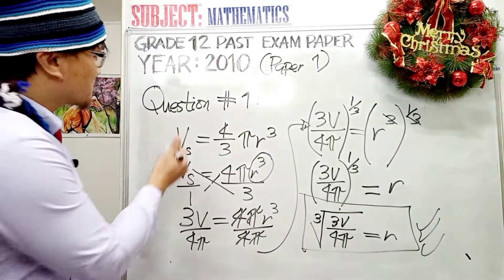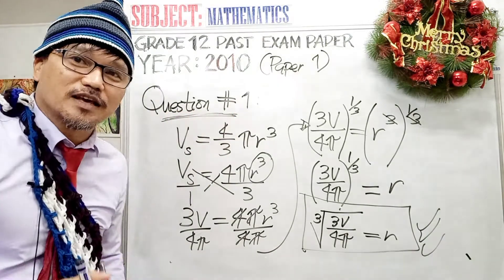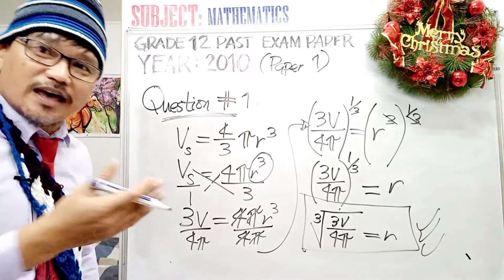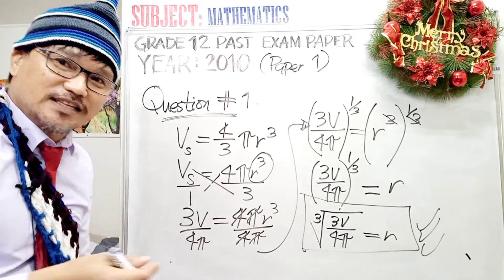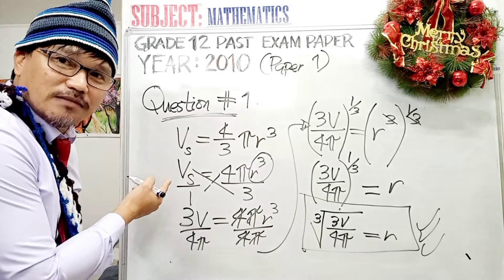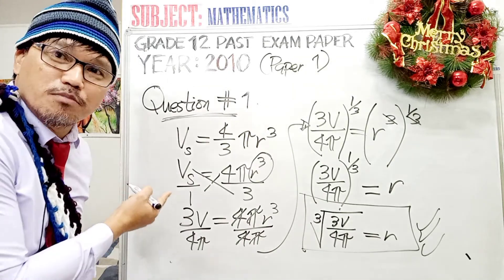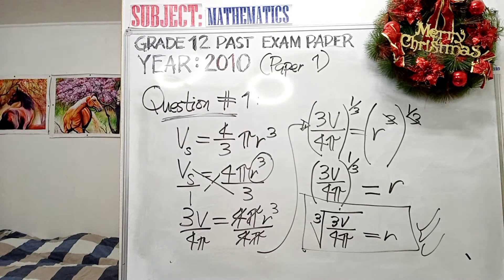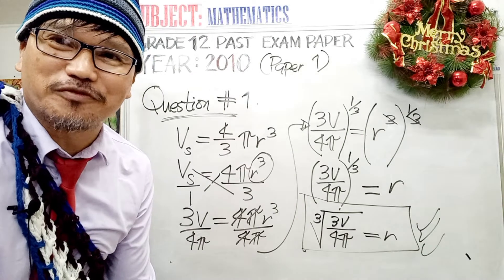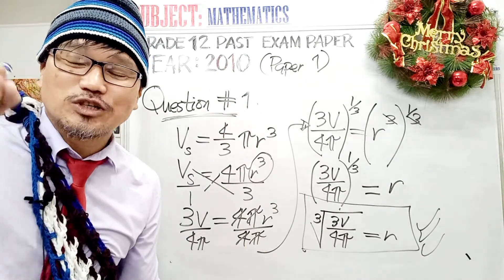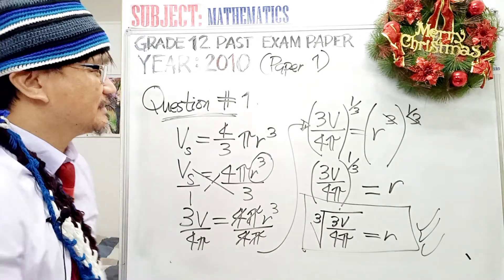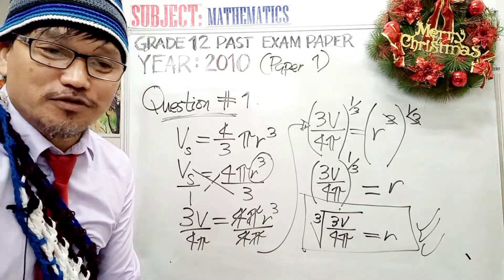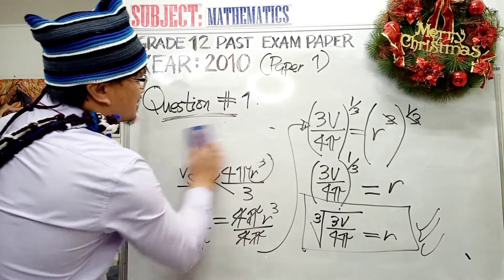This is question number 1 — the question is more on transformation of formula. Get used to this, advanced mathematics students, and get ready for it. I'll give you 5 seconds to have a look at question number 1 before we move to question number 2. Okay, time is up. So that was question number 1 — let's now move to question number 2.